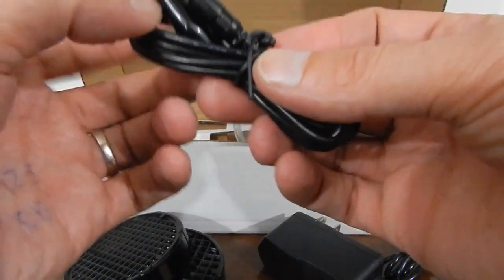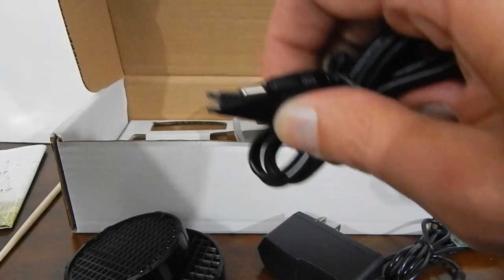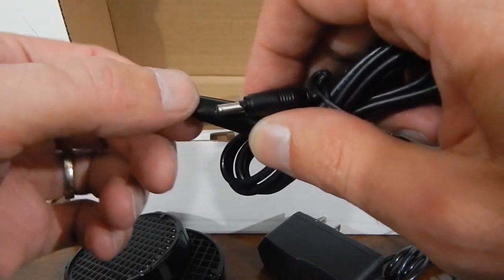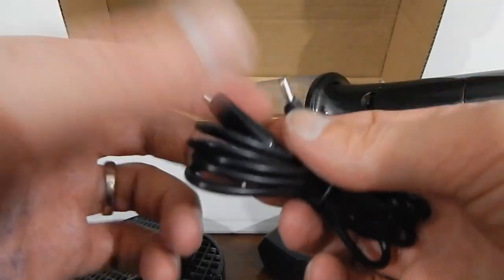And this is the little alligator clip. So basically you would clip this onto or near the item you want to flock while it's plugged into the unit.